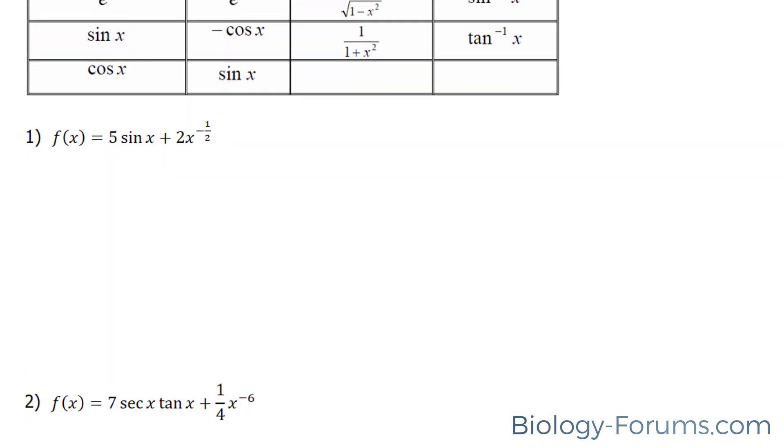In question number one, they ask us to find the antiderivative of 5 times sine x plus 2 times x to the power of negative half. This one is simple because we did examples like these in part one.